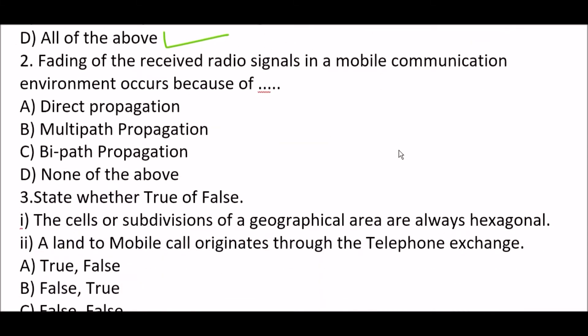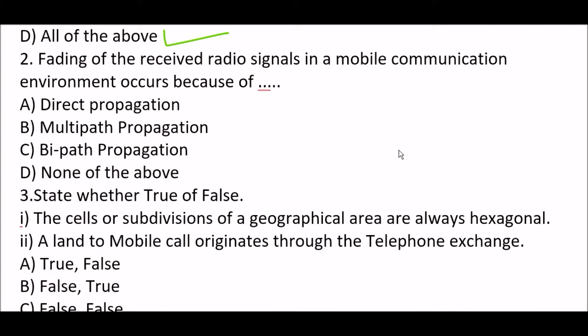Next question: Fading of the received radio signals in a mobile communication environment occurs because of blank. Option A: direct propagation. Option B: multi-path propagation. Option C: bi-path propagation. Option D: none of the above. The right answer is Option B, multi-path propagation. Fading of the received radio signals in a mobile communication environment occurs because of multi-path propagation.